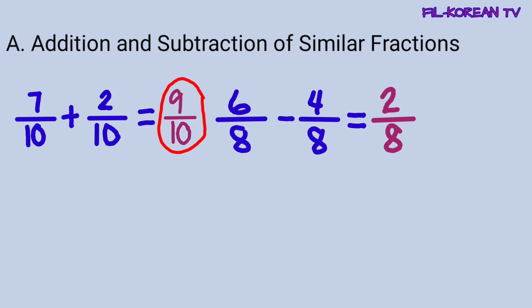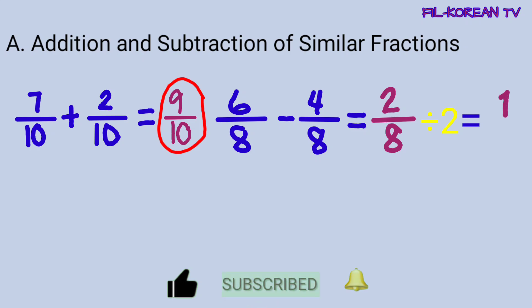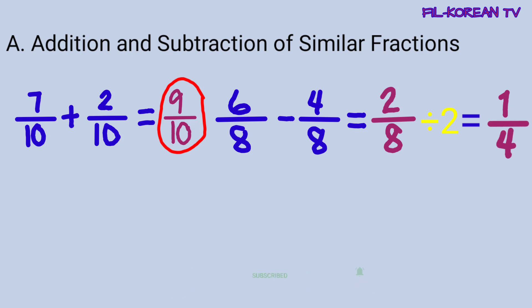Ngayon, i-reduce na natin sa lowest term itong 2 eighths. I-divide lang natin itong numerator na 2 at denominator na 8 sa kanilang GCF na 2. 2 divided by 2 equals 1. And 8 divided by 2 equals 4. So, yung answer ay 1 fourth. Eto na yung final answer.